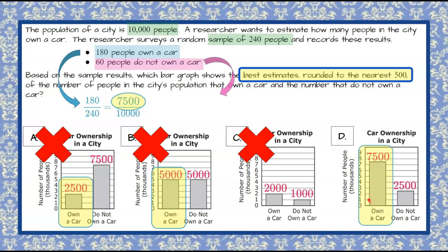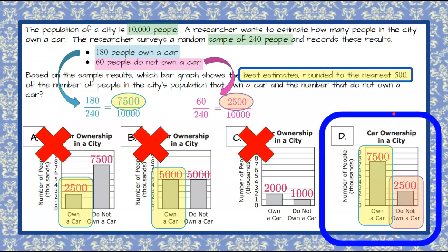Now if you wanted to be doubly sure we could take the extra ratio here 60 do not own a car out of 240. So 60 using cross products property 60 times 10,000 divide by 240 will give you 2,500 and we can see that that checks and it's 2,500 do not own a car and our correct answer here would be bar graph D representing this random sample.